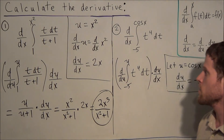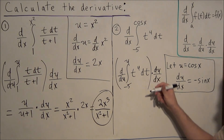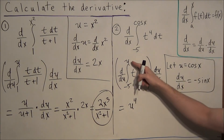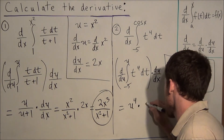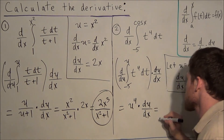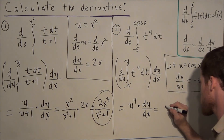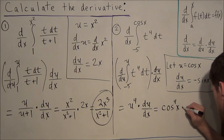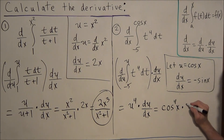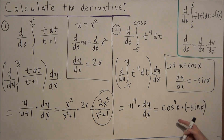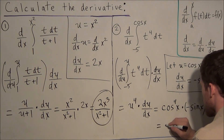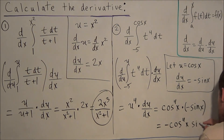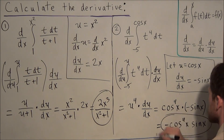Since du over du cancels, bringing us back to d/dx, we apply the second fundamental theorem: the integral simplifies to u to the 4th power — all we're doing is replacing the variable t with u — times du/dx. To simplify, we replace u with cosine of x, giving cosine to the 4th power of x, then multiply by du/dx which equals negative sine x. So the final answer is negative cosine⁴(x) times sine(x).